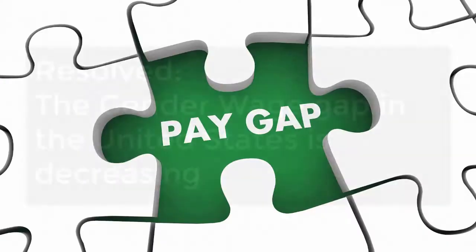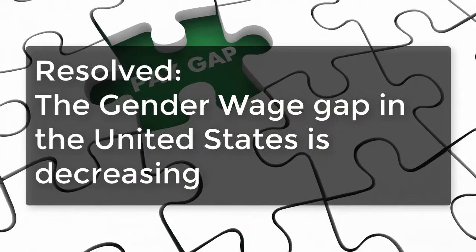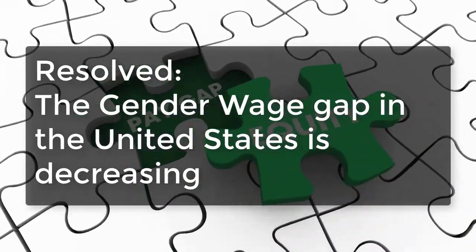Resolutions of fact tend to center around what is. They are based on an evaluation of what can be observed and proved to be accurate. Fact debates call on the affirmative team to prove that the resolution's premise is true, and the negative team must demonstrate that the affirmative team has not done so. For example, resolved: the gender wage gap in the United States is decreasing. For the affirmative to win this debate, they would need to make arguments that there is indeed a gap in wages between genders and that it has been decreasing.